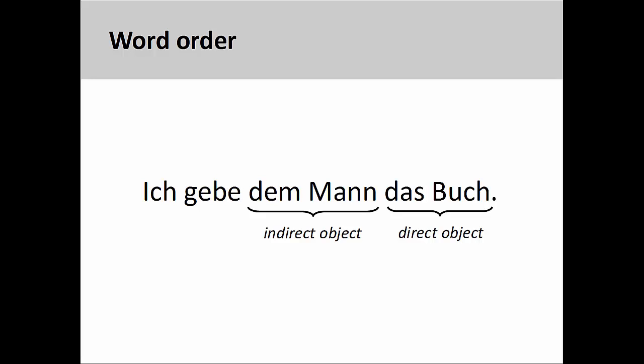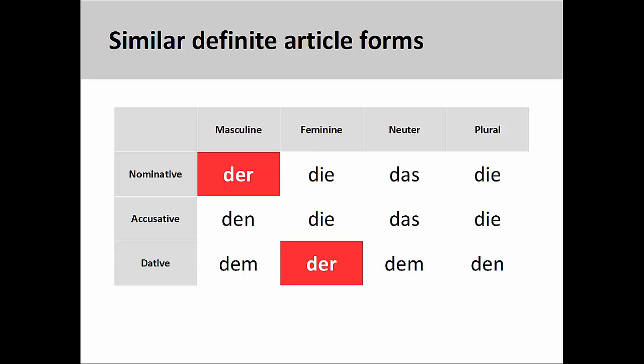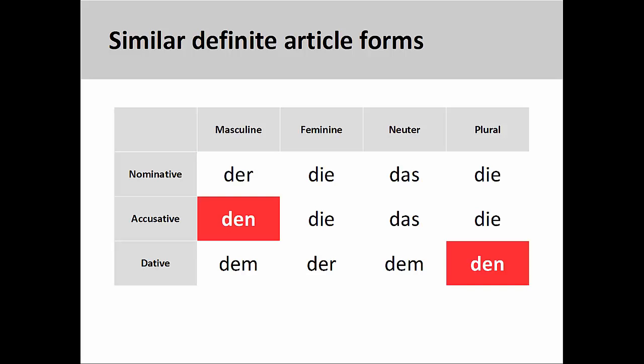A new case means new definite articles to memorize. The dative definite articles are: 'dem' for masculine dative, 'der' for feminine dative, 'dem' for neuter dative, and 'den' for plural dative. You will note that the feminine dative looks exactly like the masculine nominative 'der', and the plural dative looks exactly like the masculine accusative 'den'. As you continue your study of German, it will become increasingly important to pay close attention to definite articles to avoid confusion.